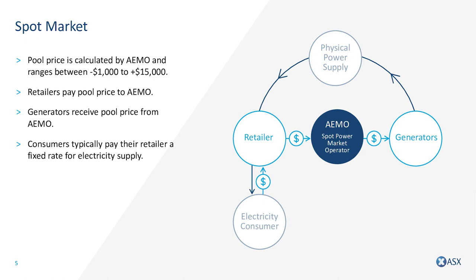Each region has its own spot market. Currently, each region has a regional reference price, which is calculated by AEMO. This variable retail reference price, also known as the pool price, is the price that generators receive and retailers pay.